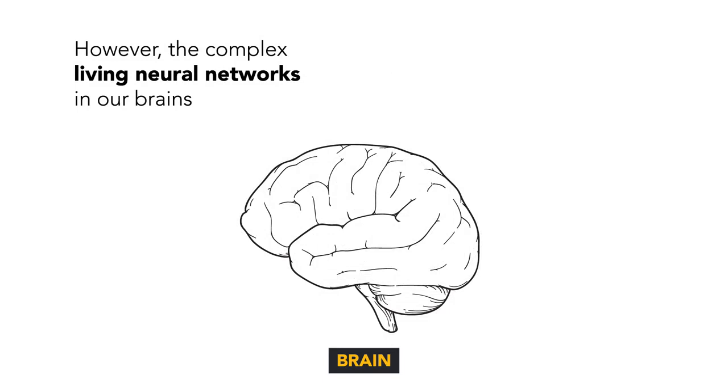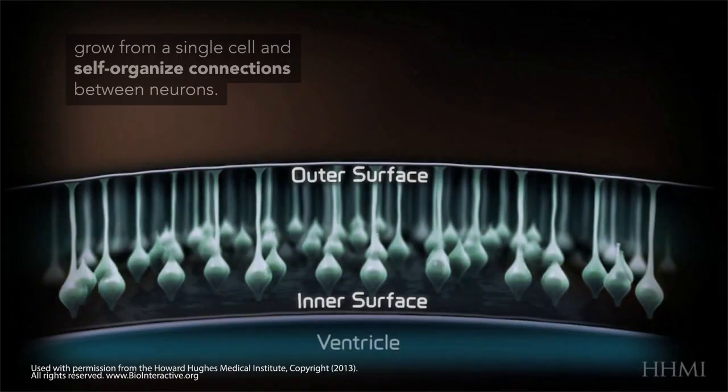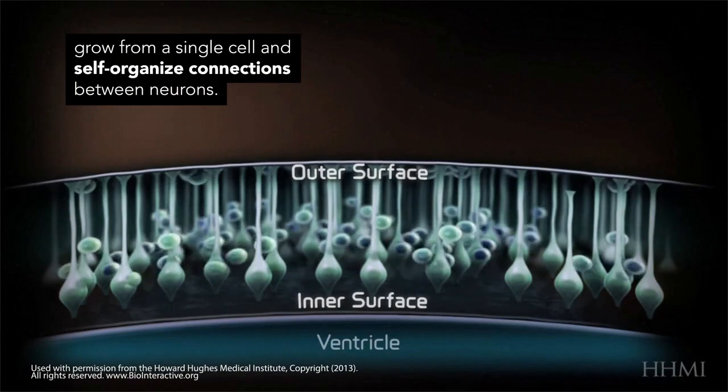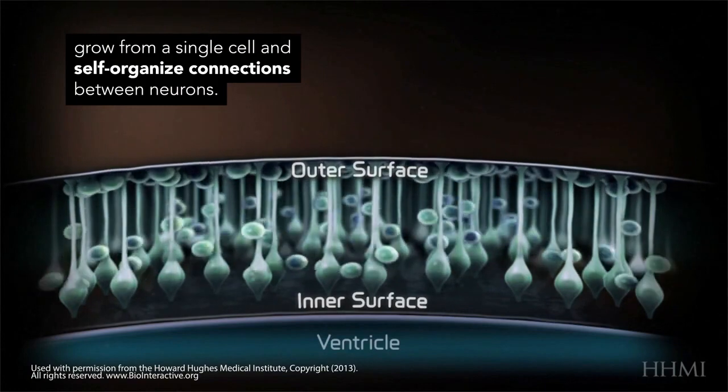However, the complex living neural networks in our brains grow from a single cell and self-organized connections between neurons.